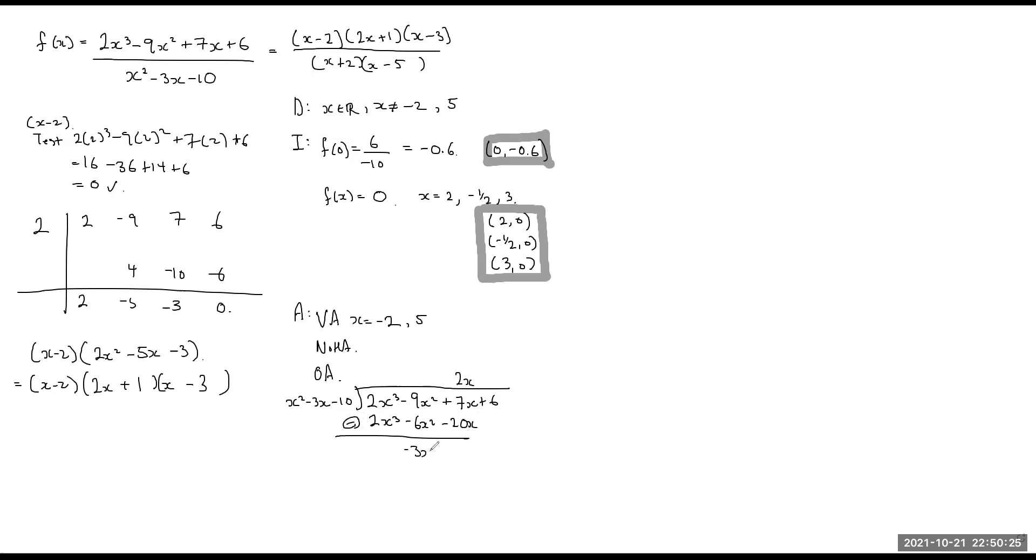And when I subtract, I get negative 3x squared plus 27x plus 6 comes down. And so I need negative 3, negative 3x squared plus 9x plus 30. And if I subtract it, my remainder is 18x minus 24.